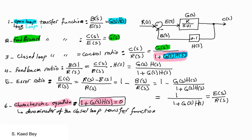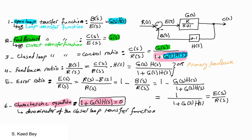Sometimes the open-loop transfer function is called the loop transfer function, whilst the feedforward transfer function is called the direct transfer function. The feedback ratio is sometimes called the primary feedback ratio, and the error ratio is sometimes called the actuating signal ratio.